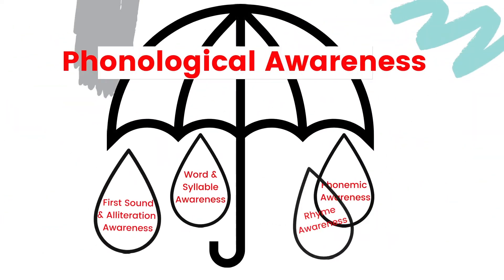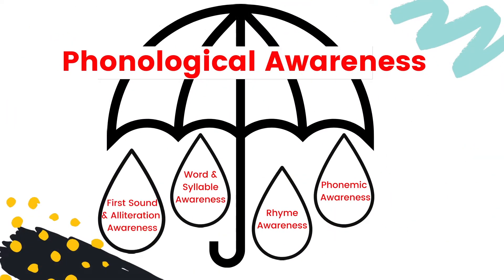When students are phonologically aware, they're able to break down words into smaller units. I like to use the example of an umbrella — that's my favorite example. Under that umbrella, we have four areas. The first area is first sound awareness and alliteration. First sound awareness just means that if I give a student a word, they can tell me the first sound of that word.